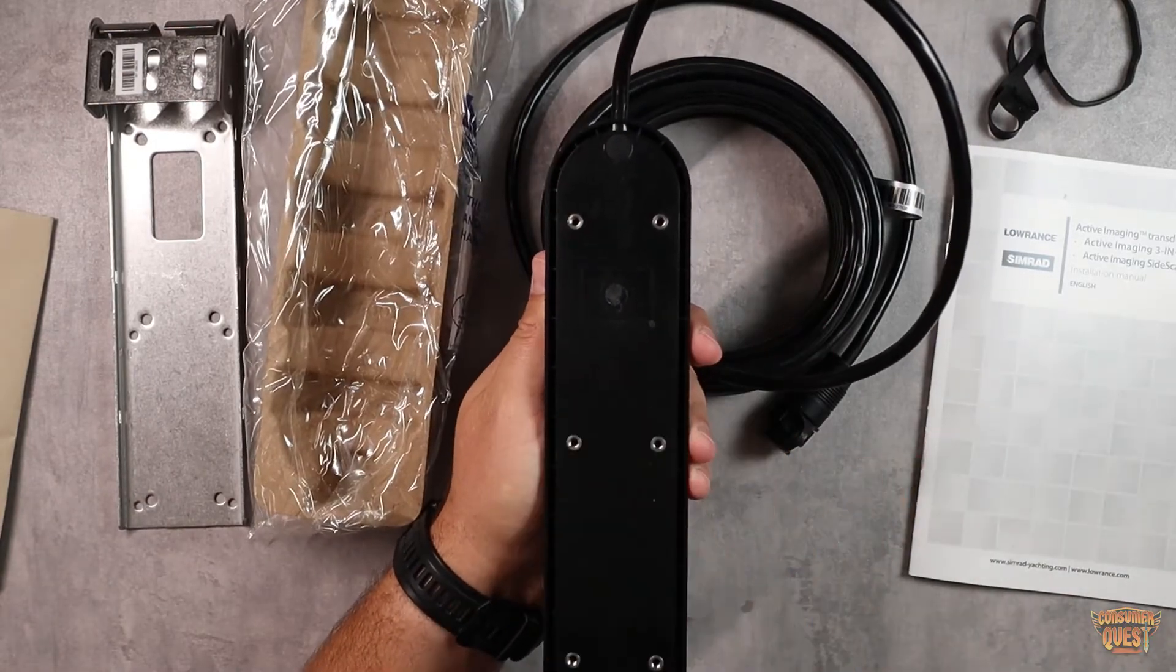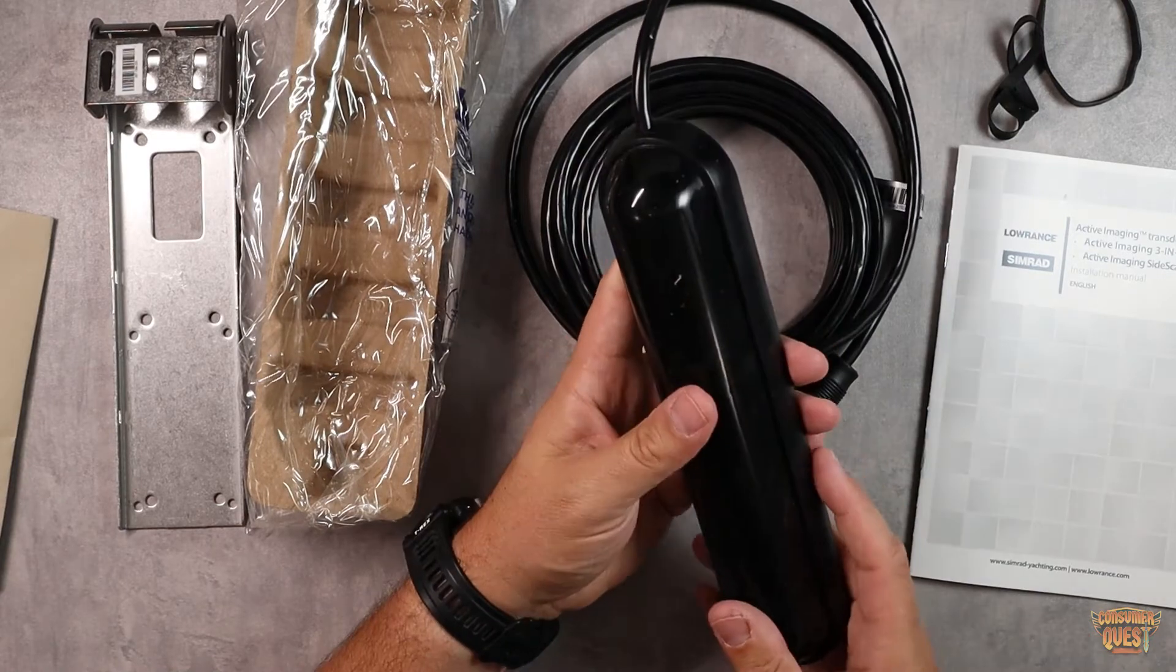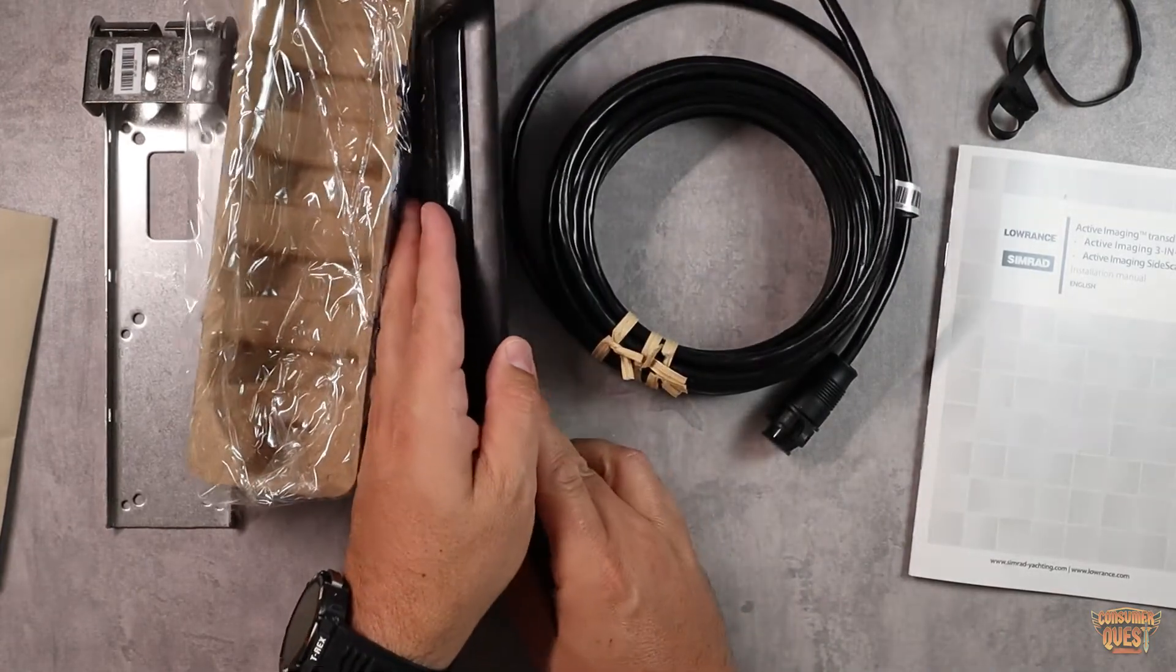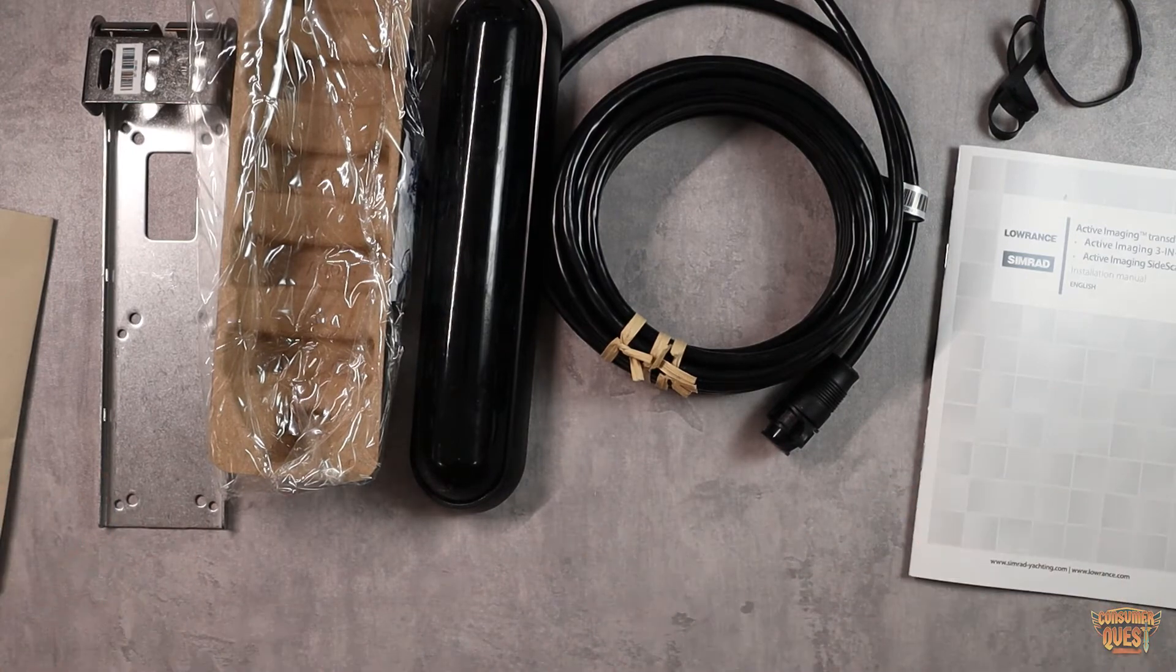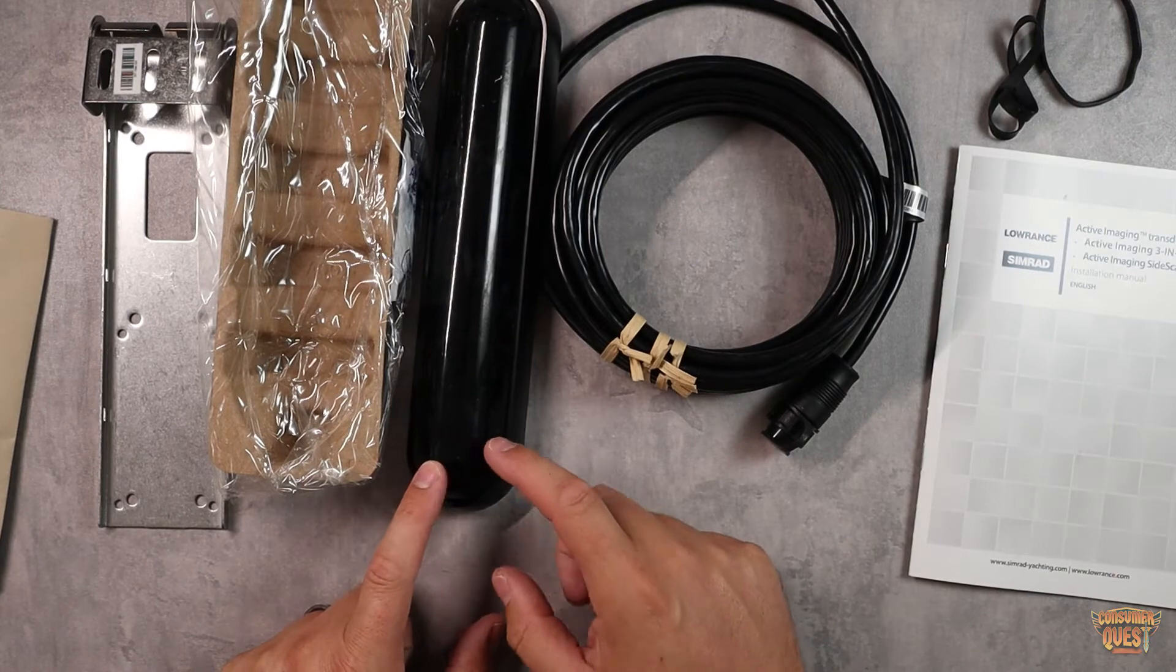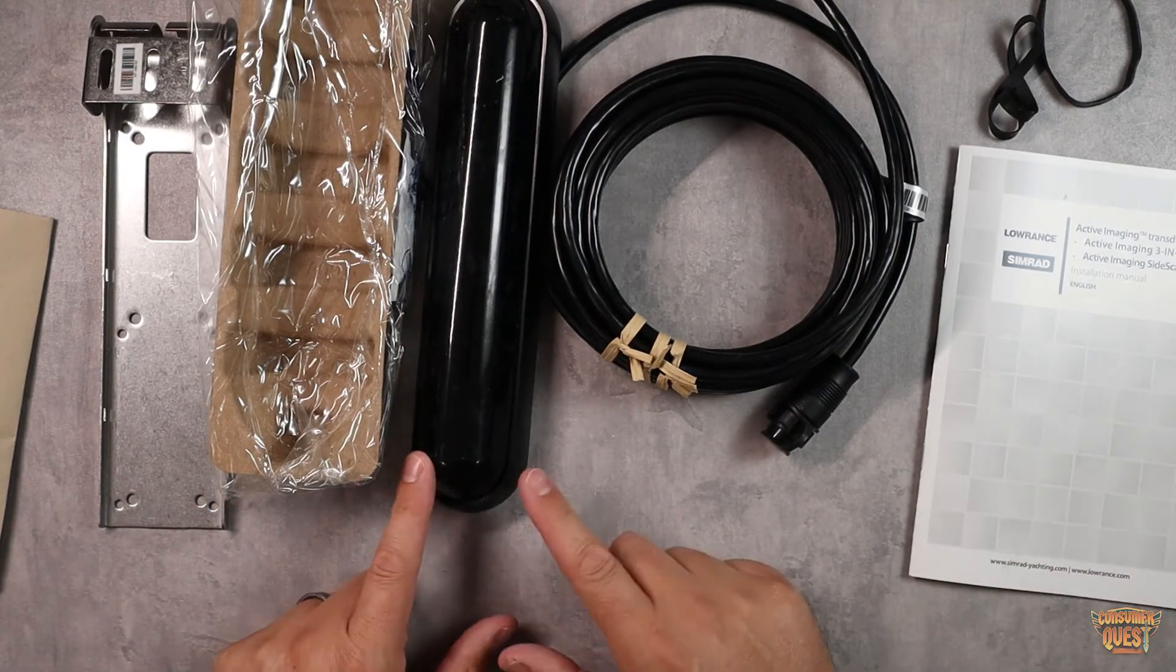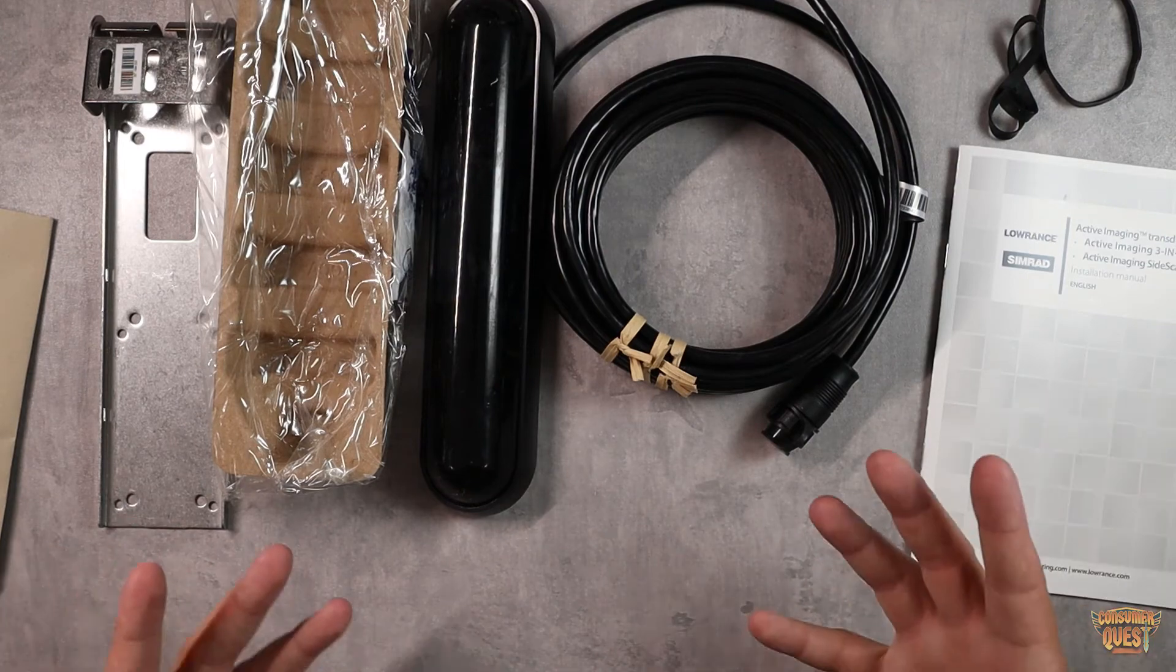And obviously you want this guy pointing straight down, which is going to give you access to that active imaging sonar, that down scan imaging, the side scan imaging, all that stuff. So very straightforward, pretty basic. But when reality kind of hits, rubber meets the road, or boat bottom meets the water, right? What we're talking about here is this is what gathers all that data, all those images to pump into your favorite Lowrance or Simrad fish finder. So really important, super high quality, but very simply packaged and everything that you need is right here.